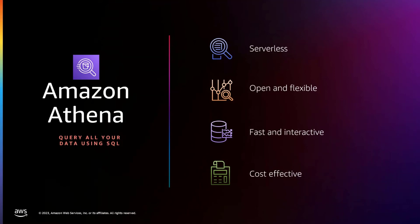Now that we've learned about what inventory reports are and how to configure them, the next step is thinking about how you can analyze those reports. Here we have Amazon Athena, which you can use to simplify this analysis. Amazon Athena is an interactive query service that makes it easy to analyze data directly in Amazon S3 using standard SQL. With just a few actions in the AWS Management Console, you can point Athena to your existing inventory reports. It's serverless, so there's nothing to manage, open and flexible for CSV, ORC, or Apache Parquet formats, and cost-effective — you only pay for the queries you run.